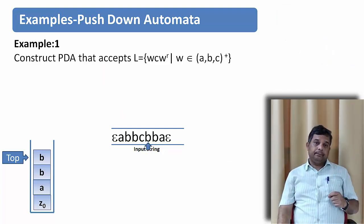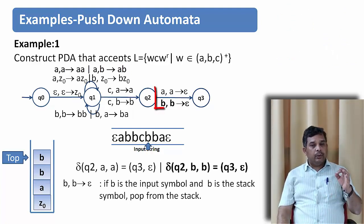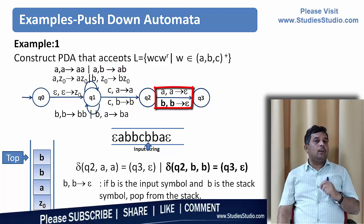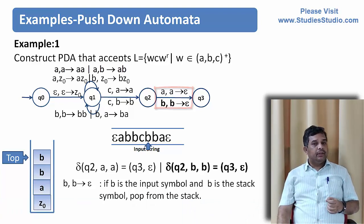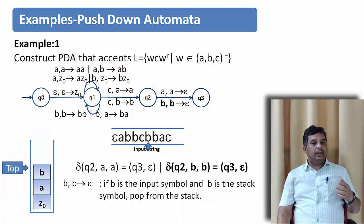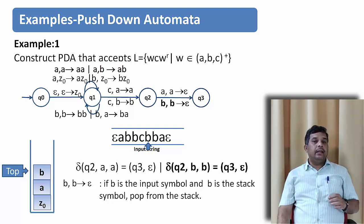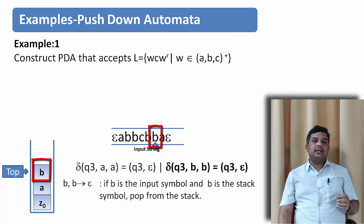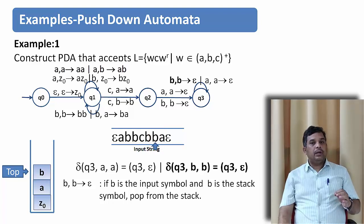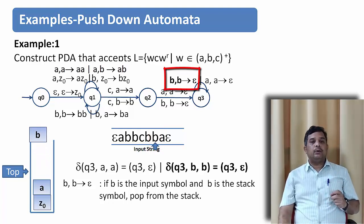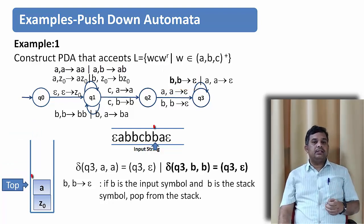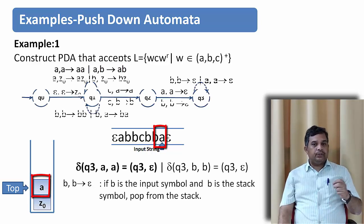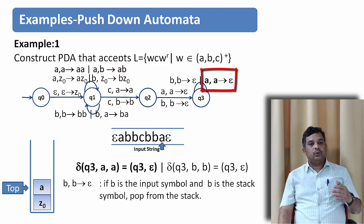The next input symbol is b. If b is at the top of the stack and b is the input symbol, we pop the top of the stack. Similarly, if a is the input and a is at the top, they match and we pop it off. The next input symbol is one more b. B is at the top of the stack and b is the input — they match, so we pop the stack. The next input symbol is a, and the top of the stack is also a — they match, so we pop it off.